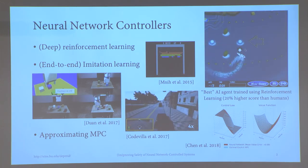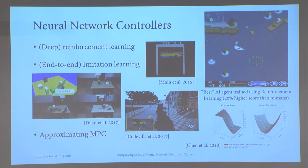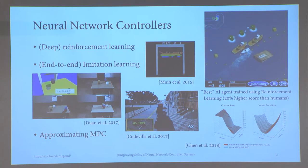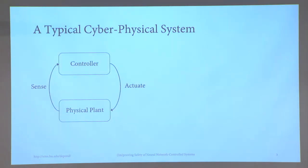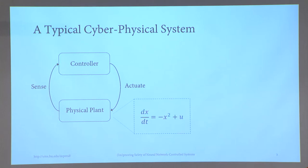In such a setup, you have a good idea of what the model is. This is a very typical cyber-physical system: a controller controlling some physical plant. For simplicity, assume perfect sensors and actuators. You know the physical model — the differential equations governing the evolution of the physical process. Here, x represents the state of the physical plant, and u represents the control outputs the controller produces.